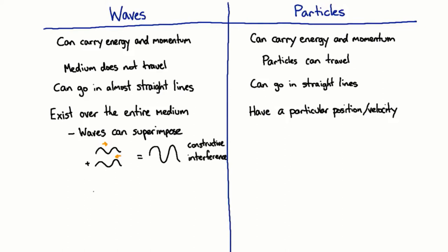On the other hand, if you have one like this, then the other one is going the other way at that moment in time. Then when you add those two together, then you're going to get nothing, no displacement. And that's called destructive interference.